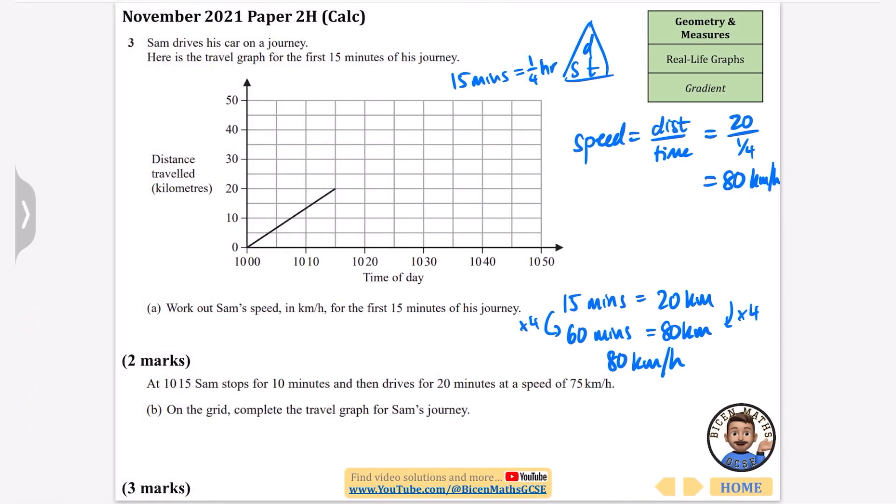At 10:15 Sam stops for 10 minutes, then drives for 20 minutes at a speed of 75 kilometers per hour. On the grid, complete the travel graph. He's going to stop for 10 minutes, from 10:15 to 10:25. Then for the next part where he's driving for 20 minutes at 75 kilometers per hour: in 60 minutes he'd go 75 kilometers, so in 20 minutes, which is a third of that, he'll go 25 kilometers.